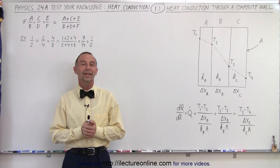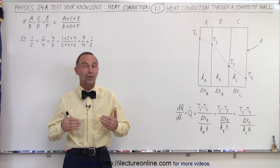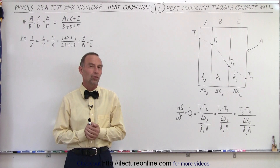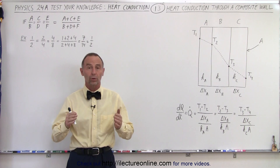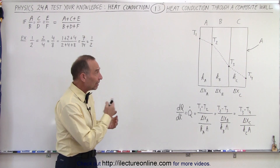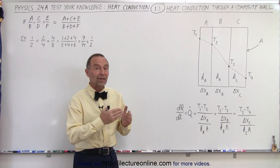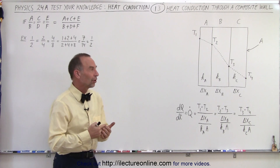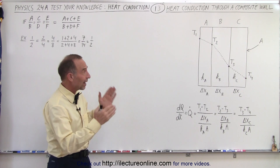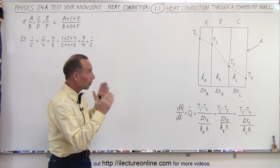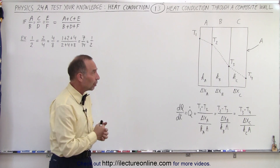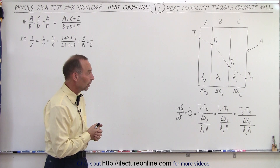Welcome to ElectronLine. Let's take a look at heat conduction through a multilayered wall, where each of the different layers has a different conductivity constant. How do we find an equation that describes the heat flow through one of those walls?